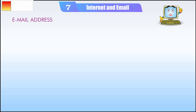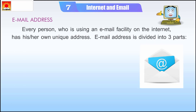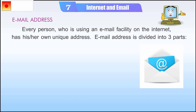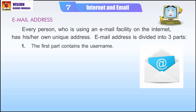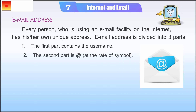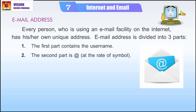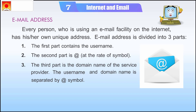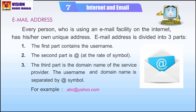Email Address. Every person who is using an email facility on the Internet has his or her own unique address. An email address is divided into three parts. The first part contains the user name. The second part is the at the rate symbol (@). The third part is the domain name of the service provider. The user name and domain name are separated by the at the rate symbol. For example, ABC@yahoo.com.